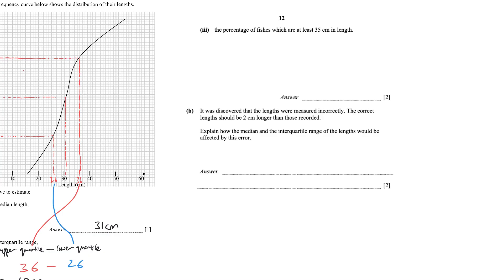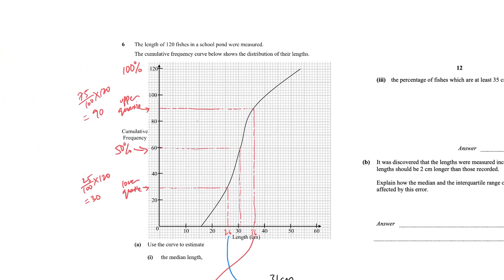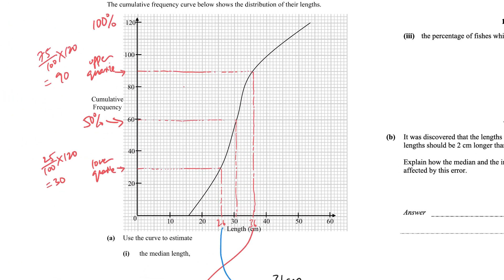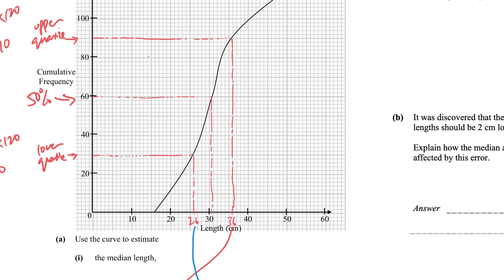And now let's look at the percentage of fishes, which are at least 35 cm in length. So we come back here, and we try to find 35 cm and more, and so let's see. We'll see where that takes us.